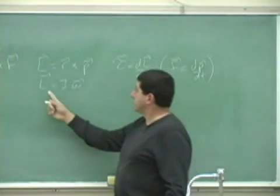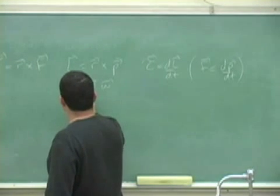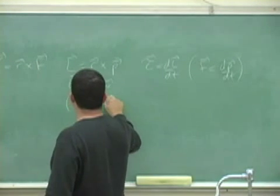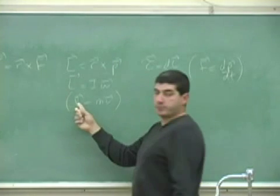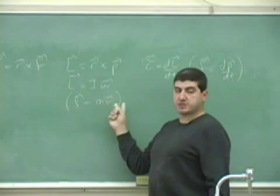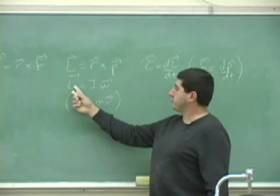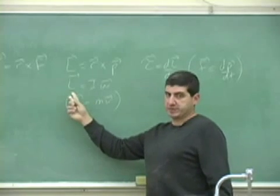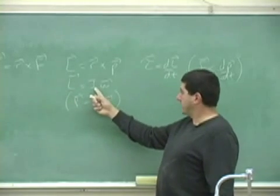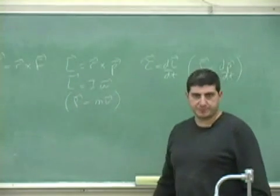And L equals I omega is the rotational counterpart of the equation P equals mV. Linear momentum is mass times velocity, and then linear momentum is replaced by angular momentum L, mass is replaced by I, and V is replaced by omega.